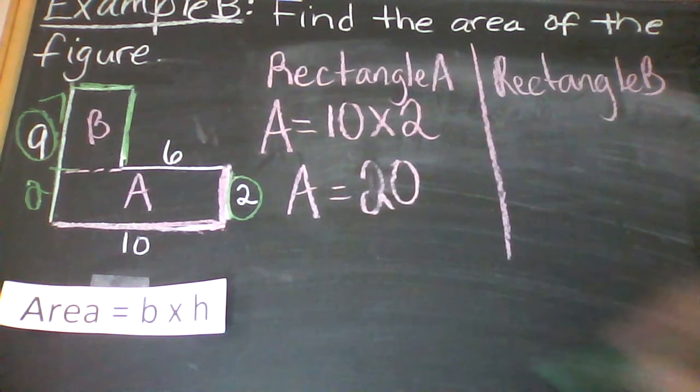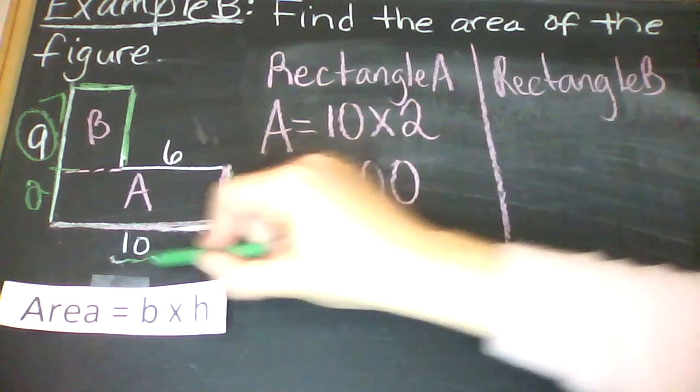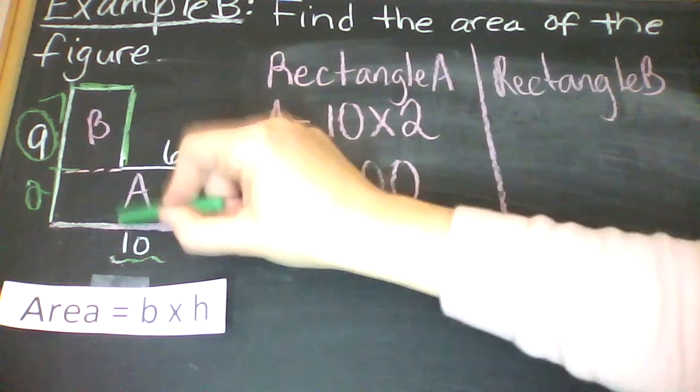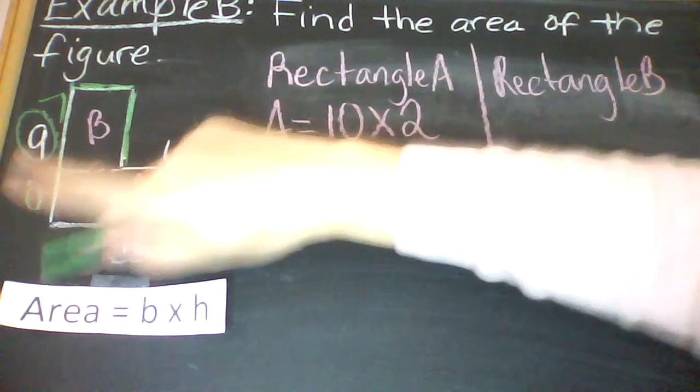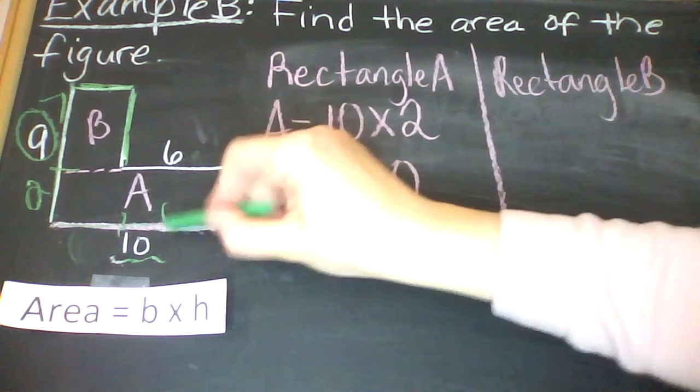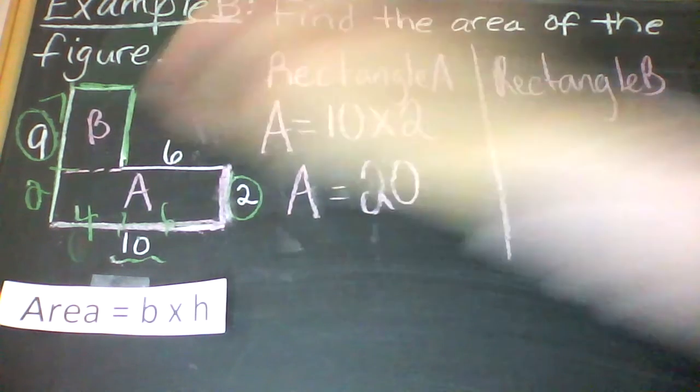And then for the horizontal distance, I have to use 10, and then from here to here, that is given as 6. Sorry, I wrote the 6 in the wrong spot. Here to here is 6. 6 plus 4 is 10.